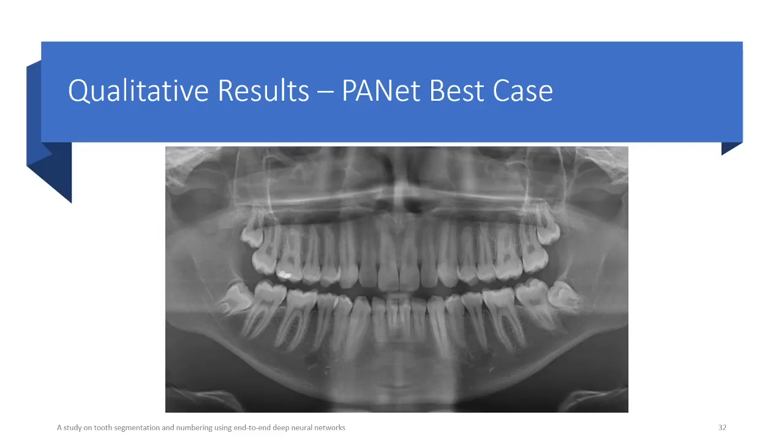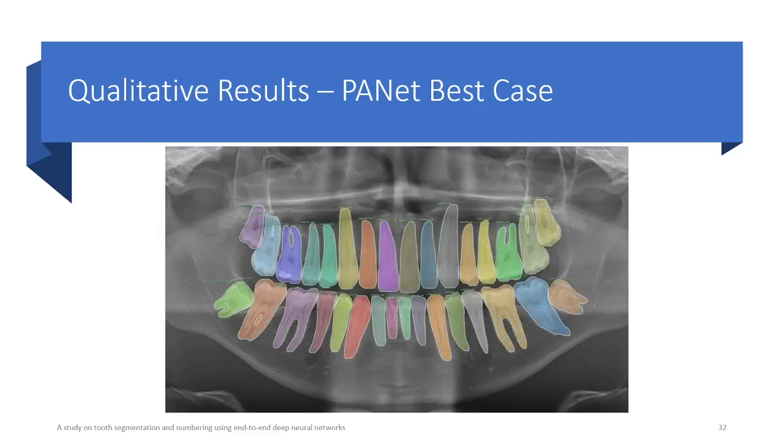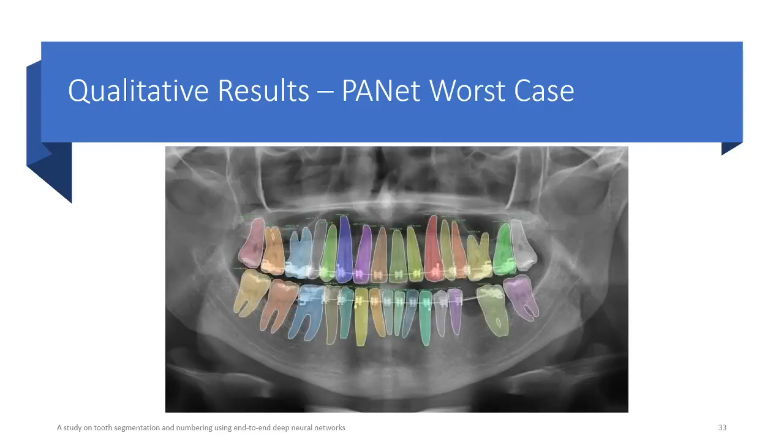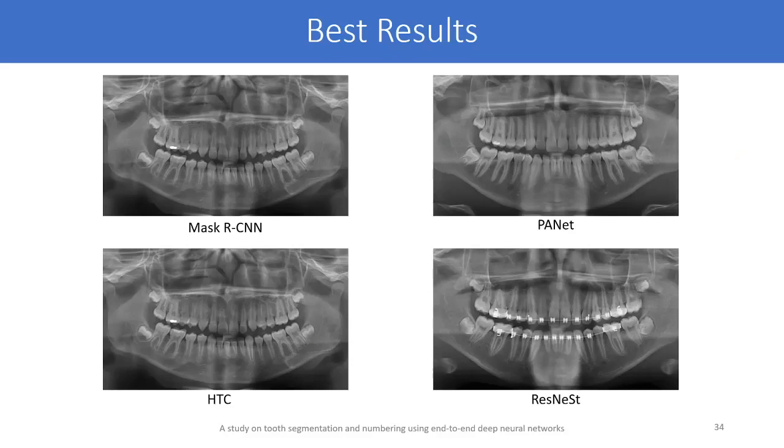Let me show you some qualitative results so you can have a better sense of the architecture's performance. Firstly, let's see the best Mean Average Precision result of the PANet. Pretty good, huh? Now let's see the worst result. It is also quite impressive. The bad Mean Average Precision in this case is a consequence of a crude annotation.